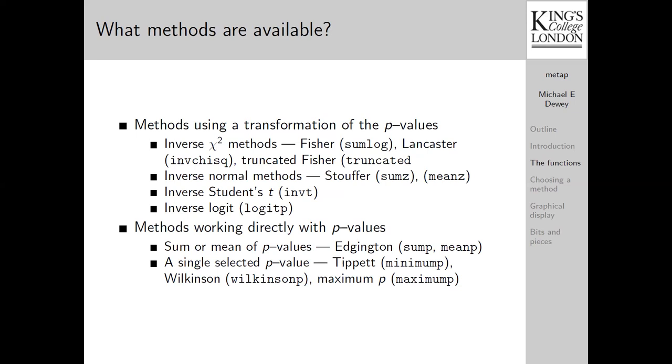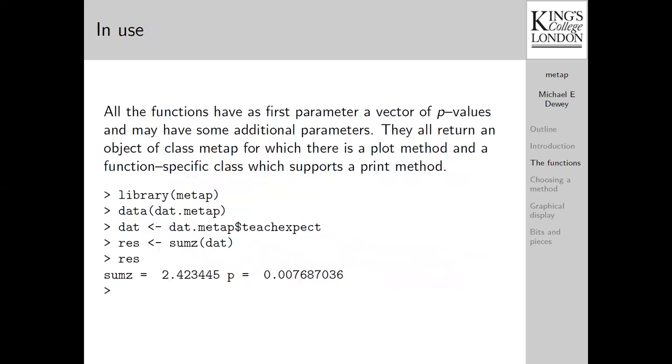There are also a number of methods which work directly with the p-values, either with the sum or the mean of them, or just using a single selected p-value. I think of these, the most well-known methods are Fisher's method, which relies on the sum of logs, which is in fact with two degrees of freedom an inverse chi-squared, Stouffer's method, and possibly Tippett's method, the minimum p, although that's not often known by that name.